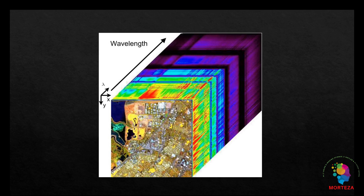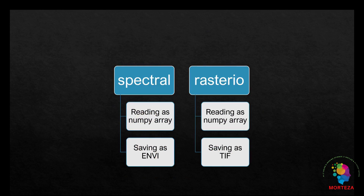There are a few ways in which you can read and save ENVI images of hyperspectral data in Python. Two of the most popular libraries are rasterio and spectral. There are similarities and differences between these two libraries in how they handle ENVI images of hyperspectral data. In both of them, after reading the hyperspectral data into Python, you'll have a NumPy array.